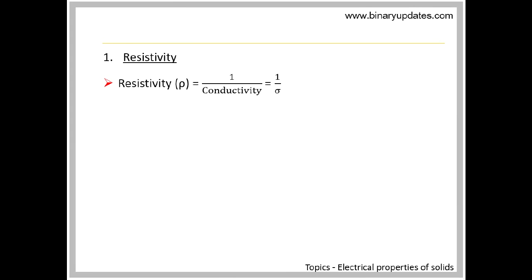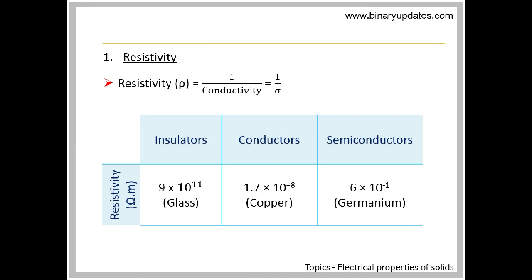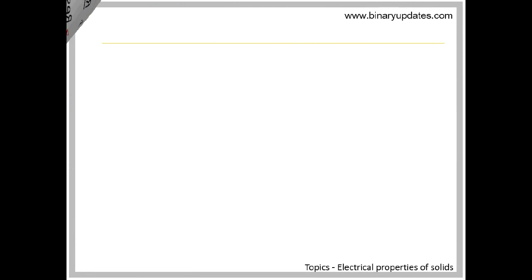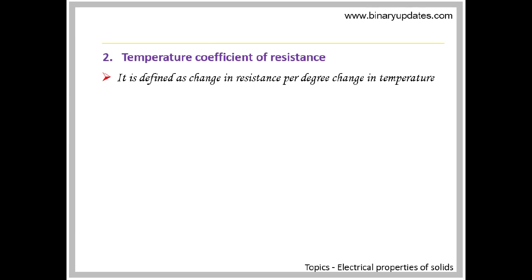The resistivity is the opposite of conductivity, which is denoted as sigma. The resistivity of some materials is shown in a table. The second property is the temperature coefficient of resistance. The resistance of good electrical conductors changes with temperature. This variation is expressed in terms of temperature coefficient of resistance.